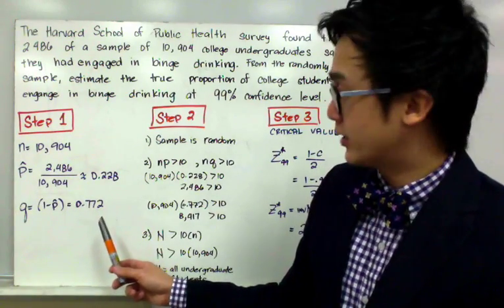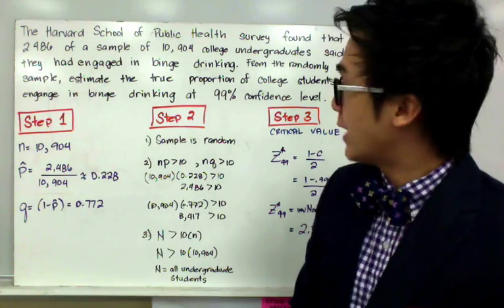Now let's see if the conditions are satisfied. For step number two, we know that the sample is randomly selected.